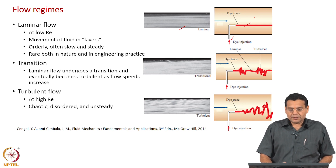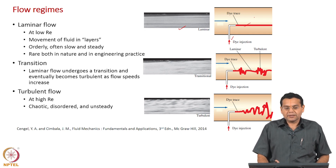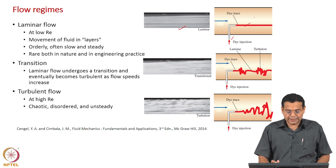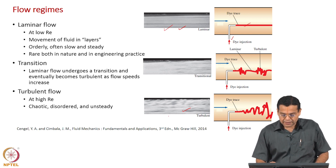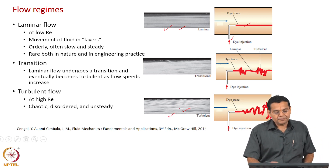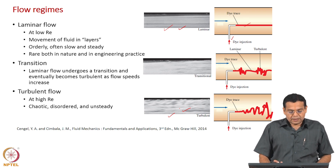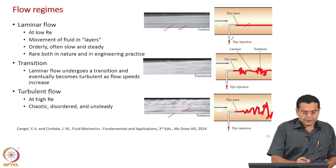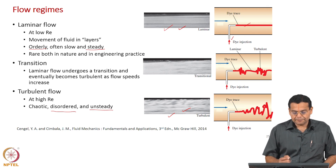Inherently, turbulent flow is always unsteady — there are always velocity fluctuations. A photograph of a turbulent flow is shown; you can see the difference compared to the laminar photograph. The flow is chaotic, disordered, and unsteady — almost opposite to the orderly, steady laminar flow.